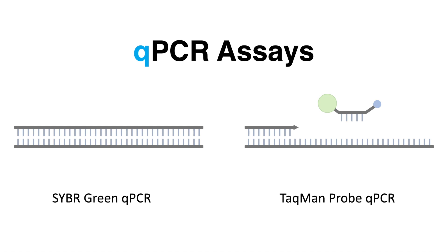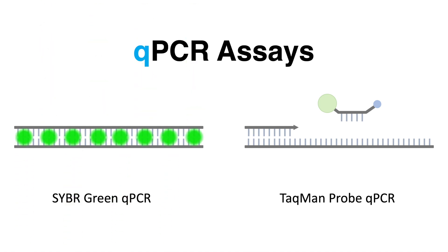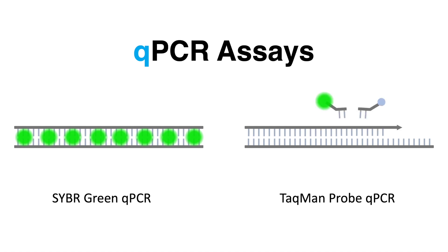QPCR is mainly performed using one of these two assays. In the SYBR Green assay, the fluorescent reporter is an intercalating dye that binds to double-stranded DNA. The TaqMan qPCR method works with probes specifically designed to bind the sequence of interest. Upon synthesis of the complementary DNA strand, the probe is cleaved which results in a fluorescent signal.